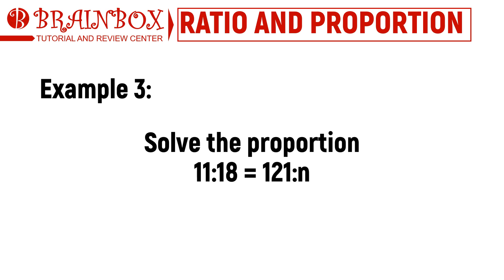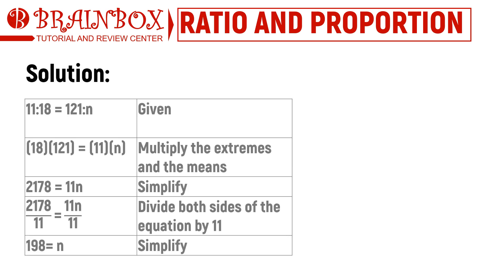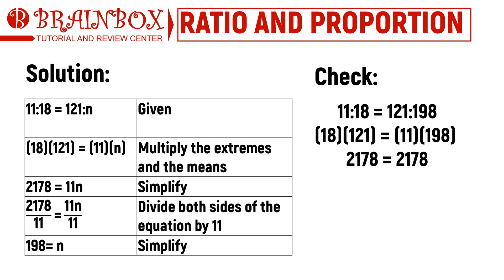For our last example: solve the proportion 11 to 18 equals 121 to n. We follow the same procedure — multiply the extremes and the means, simplify, then solve the resulting equation by dividing both sides by 11. To check, substitute 198 for n into the given proportion. Since the products of the extremes and the means are both 2178, our answer is correct.